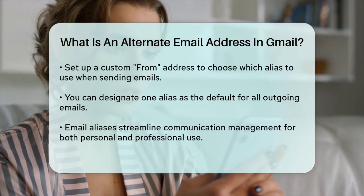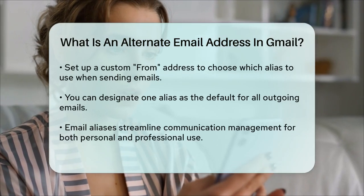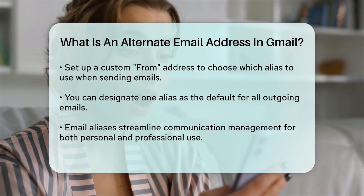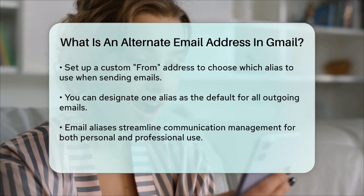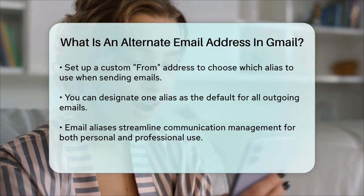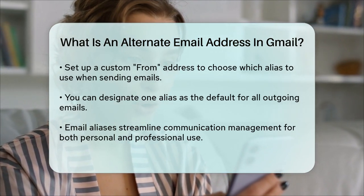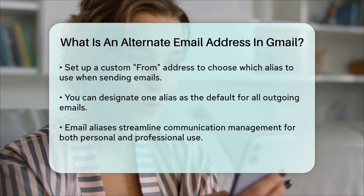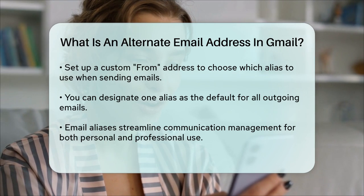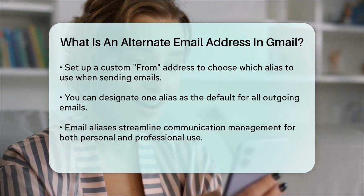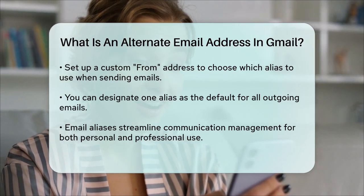When sending emails from an alias, you need to set up a custom from address in Gmail. This allows you to choose which alias you want to use when composing an email. You can even set one of your aliases as the default email address for all your outgoing emails.